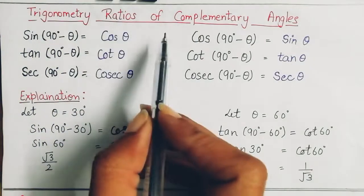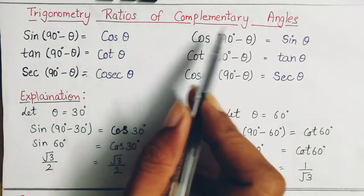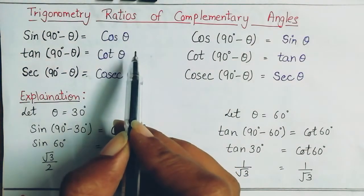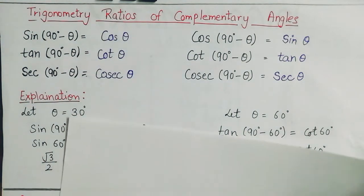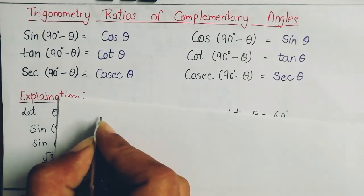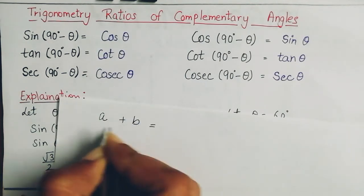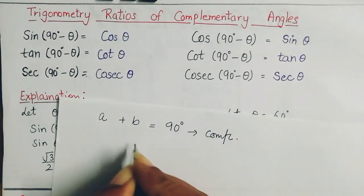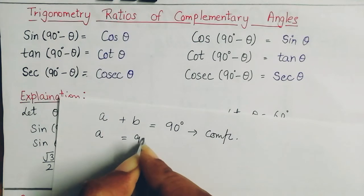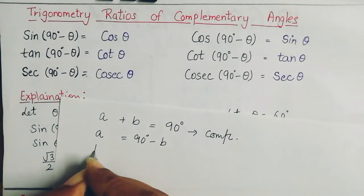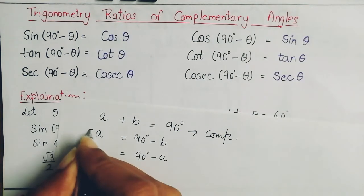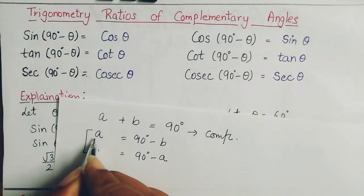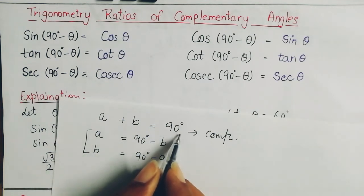The next category is trigonometric ratios of complementary angles. Complementary means the sum of two angles is 90 degrees. So if we have angle A and angle B and their sum is 90°, then A = 90° − B and B = 90° − A. This is the complementary relation — if one acute angle is given, the other is 90 minus that angle.